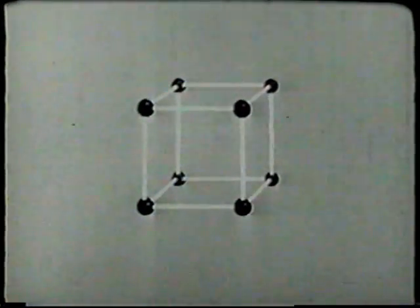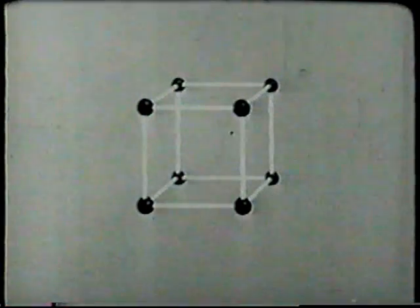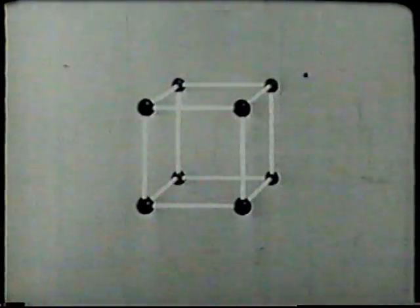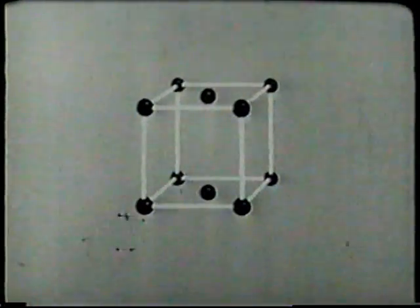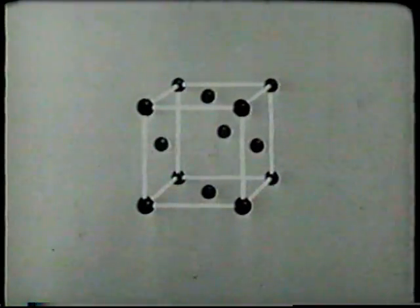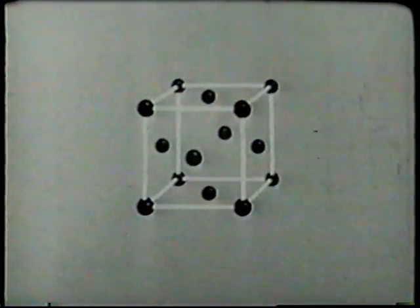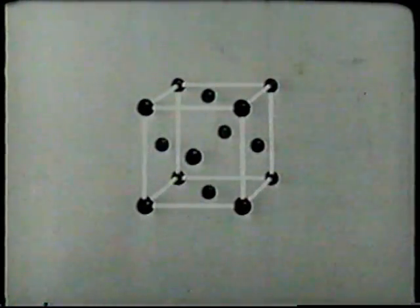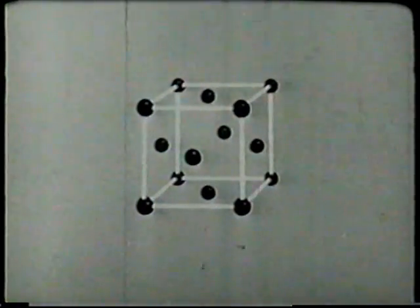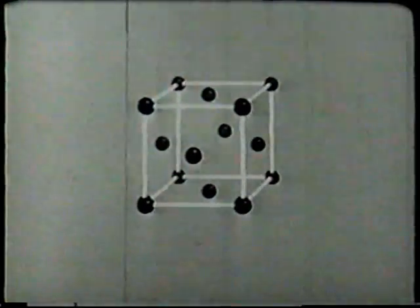The single lattice or unit cell is conceived to be cube shaped with atoms of the metal arranged in regular order, one at each corner and one in the center of each face of the cube. Aluminum unit cells are classified as the face-centered cubic type.